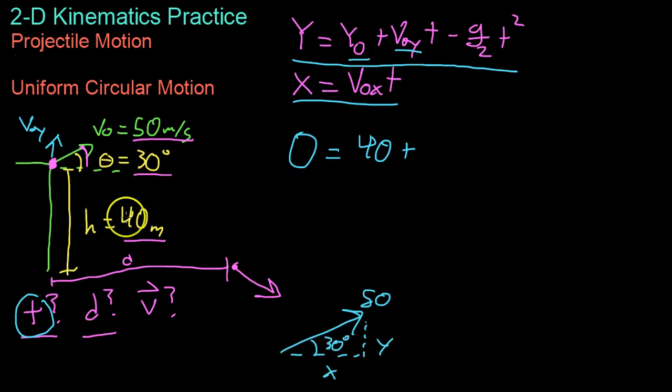Now because we know that sine is opposite over hypotenuse, we know that this y value is going to be 50 times the sine of 30. So we write that in as our initial y velocity. Because after all this is the initial y vector. So 40 plus 50 sine of 30 times time because that's what relates the distance and velocity.